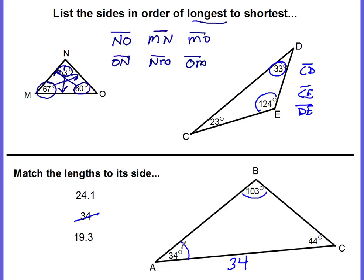Since 34 degrees is the smallest angle, the smallest side — 19.3 — goes opposite it. The middle angle is 44 degrees, and the side opposite that would be the middle-sized side, which is 24.1.